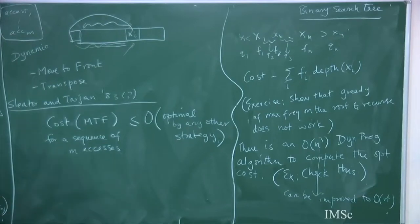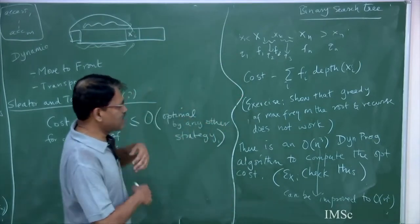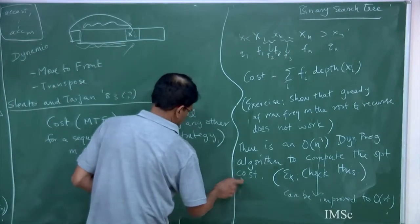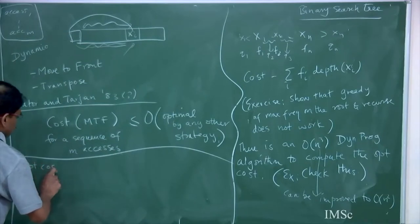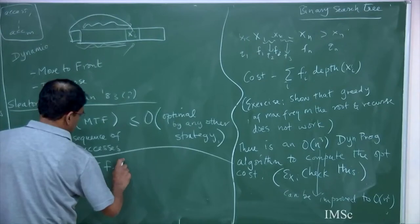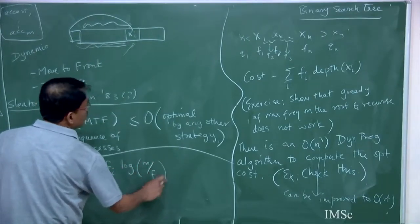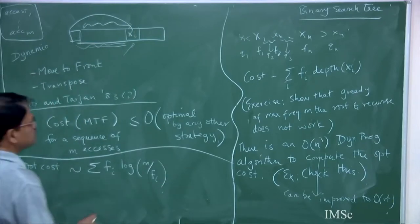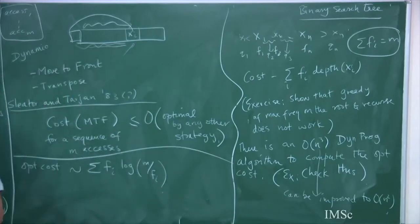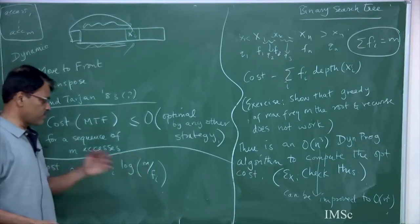And it turns out the optimum cost — not very surprisingly — is proportional to what is called the entropy of this distribution. It is summation of fi times log(m/fi), where summation fi equals m. So I am doing m accesses. Here it is summation fi times i, whereas for BSTs it is summation fi times log(m/fi). This is also called the entropy of your distribution.